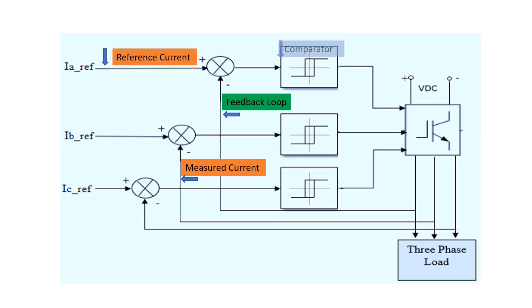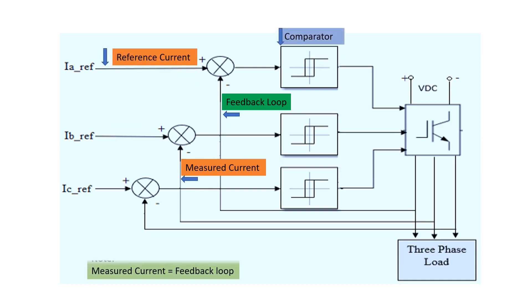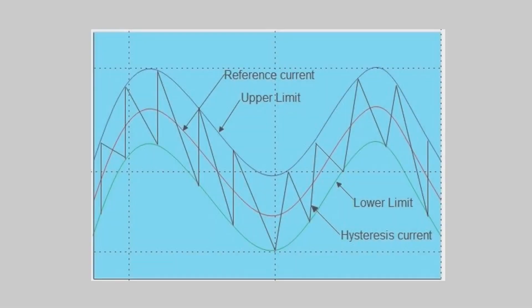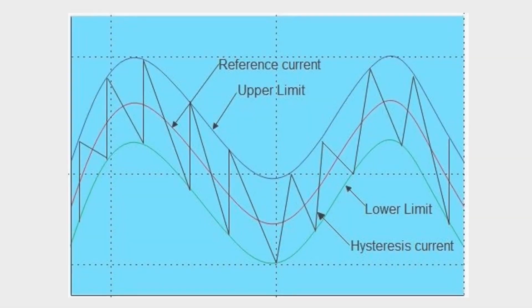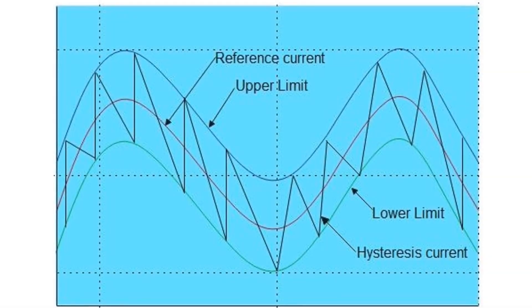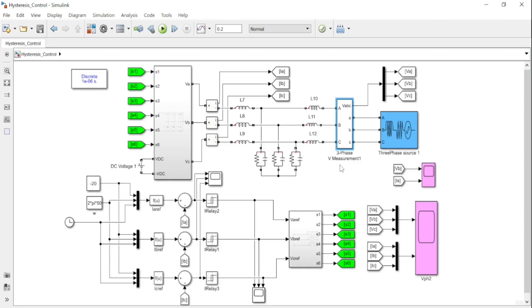This type of controller is so commonly used because it's easier to implement and has fast transient response. However, a hysteresis current controller has variable switching frequency.